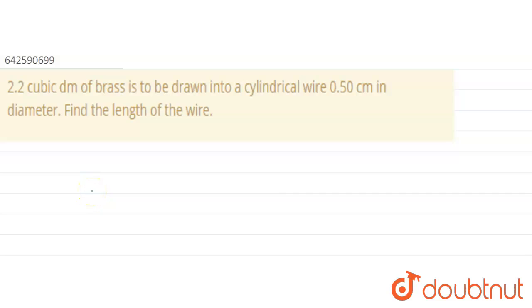2.2 cubic decimeter of brass is to be drawn into a cylindrical wire 0.50 centimeter in diameter. Find the length of the wire.